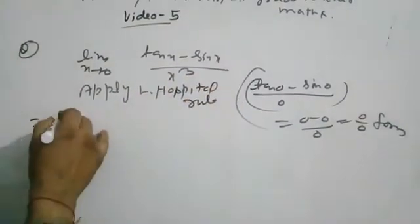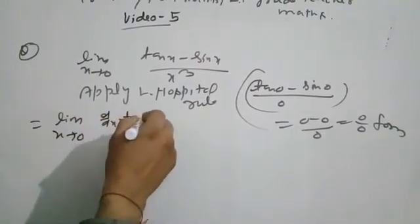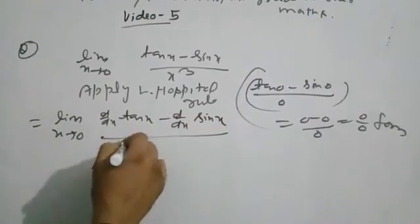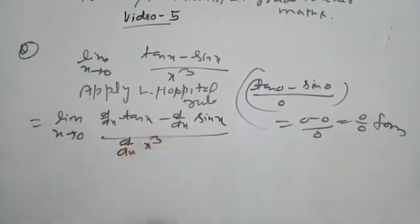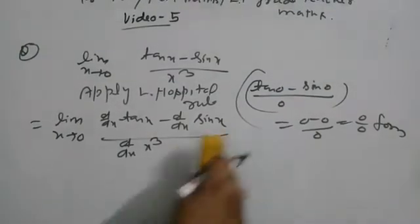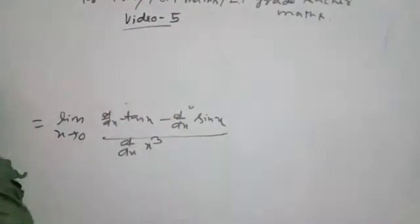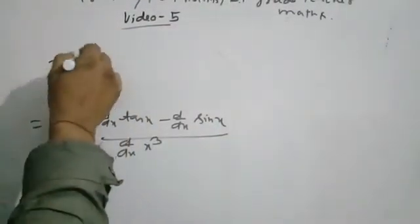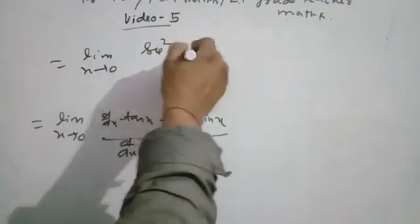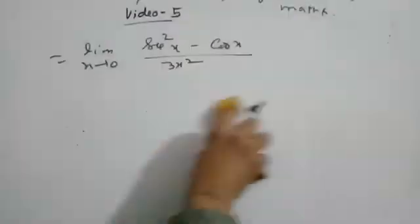Applying L'Hôpital's rule: differentiate numerator and denominator. The limit x tends to 0 becomes (sec²x − cos x) / (3x²). Substituting x = 0 still gives 0/0 form.